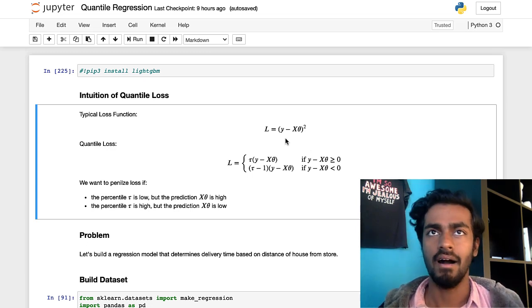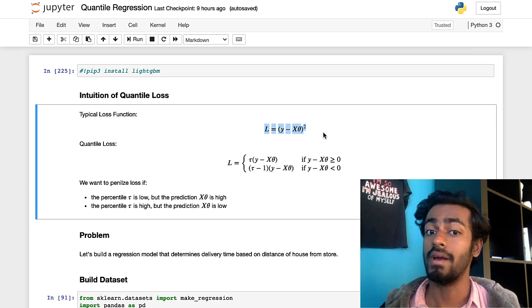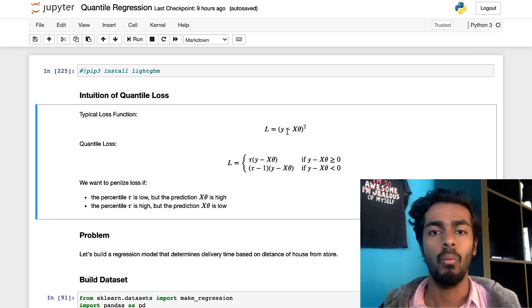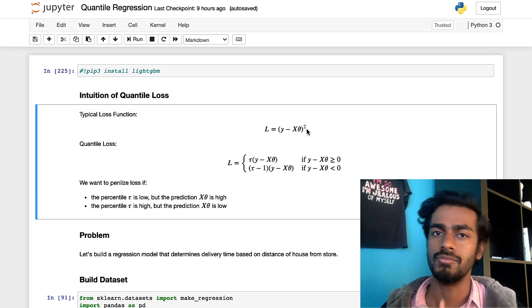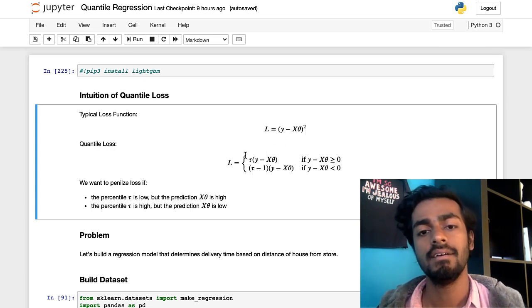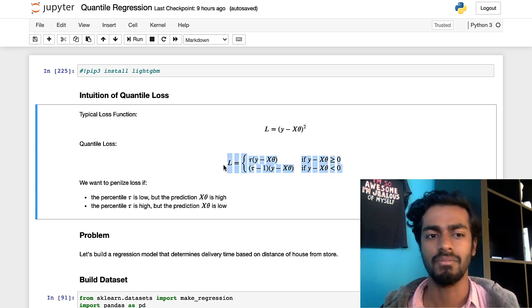So typically like I said any kind of regression problem we kind of have this kind of loss of a squared error loss where y is the actual time in this case the actual label and then x theta is something that's predicted by our model which would be the ETA in this case. Now for quantile loss it changes quite significantly. Well actually not that much. It looks pretty complicated but it's a pretty simple formulation.